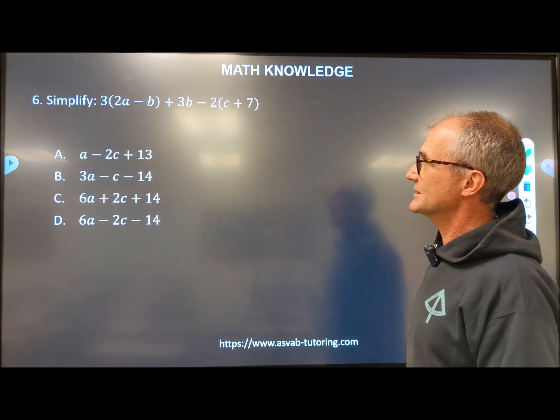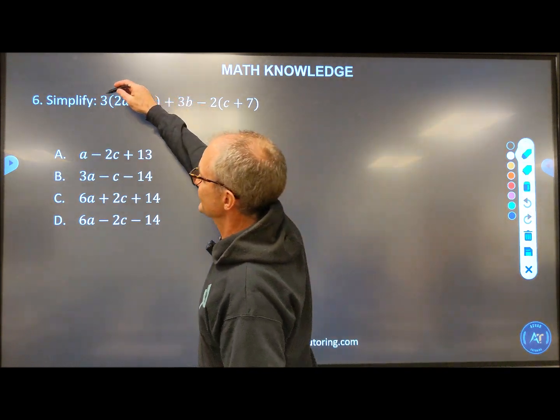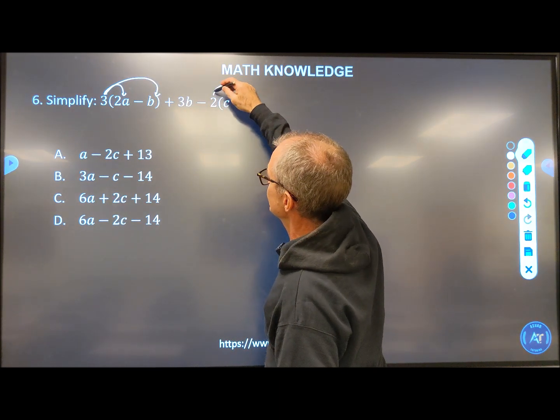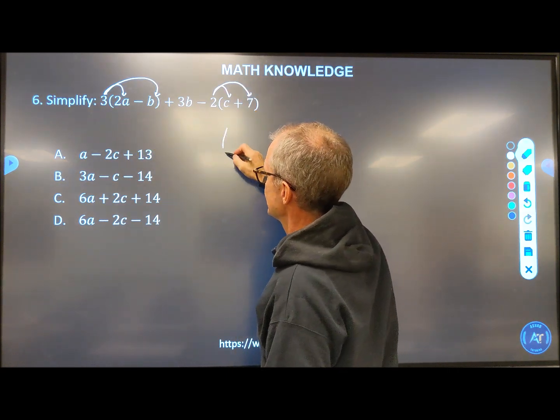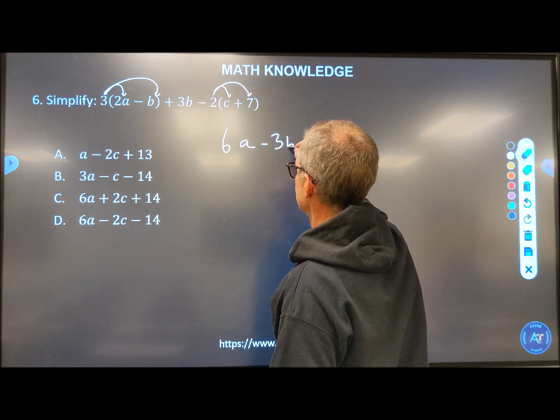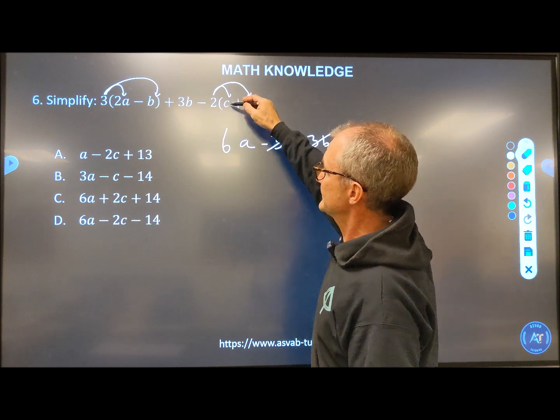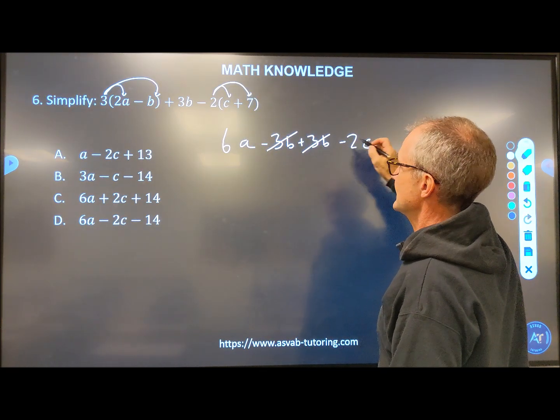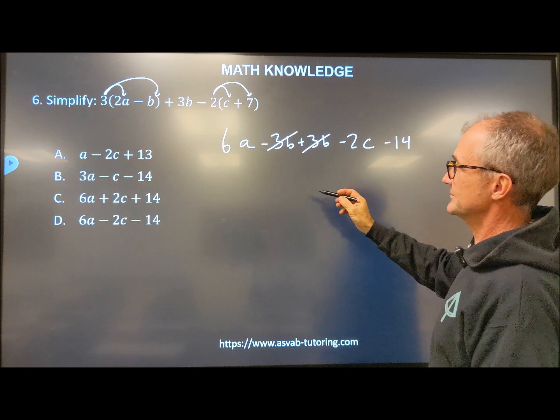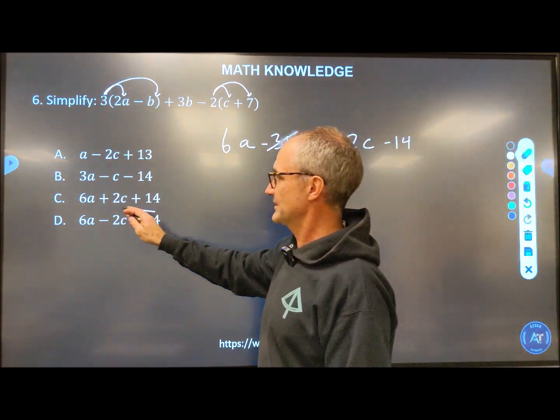Number six, simplify this expression. A couple of things going on here. We're going to have to combine all similar terms, but before we could do that, we're going to have to distribute this number through the quantity. So we're going to have to do three times that, three times that, then distribute the negative two through this quantity. So three times 2A is 6A. Three times negative B is minus 3B plus 3B. That's that one there. Those are going to cancel. Negative two times C and then negative two times seven, negative 14. So those canceled. These are all dissimilar terms. So I have 6A minus 2C minus 14. None of them can be combined. So I find it right there, answer D.